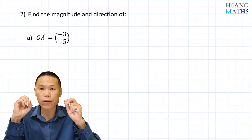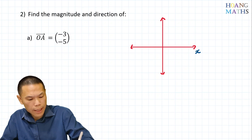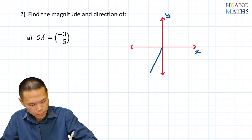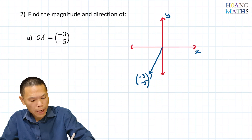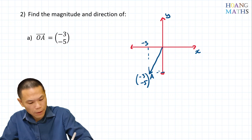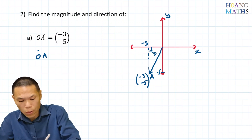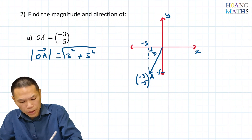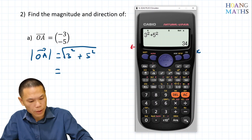To work out the direction and magnitude of OA, we draw the vector on the diagram first. This is X and Y. The vector OA is (-3, -5), so it's on the third quadrant. This is negative 3, negative 5. To work out the magnitude using Pythagoras' theorem: |OA| equals the square root of 3 squared plus 5 squared, which gives square root of 34.